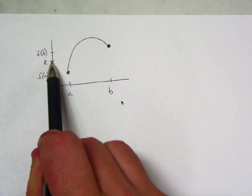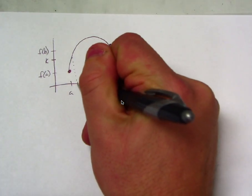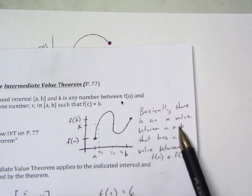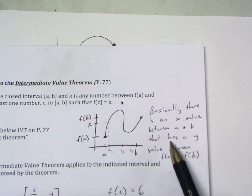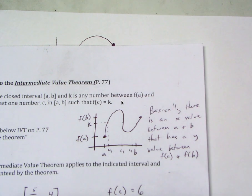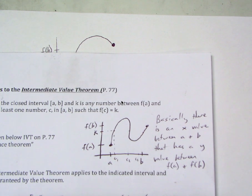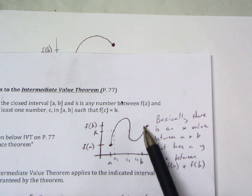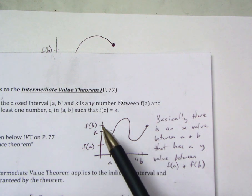You can see it: right here it would be this X value — there would be our C value right there. It's going to happen. Essentially what it means is there is an X value between A and B that has a Y value between F of A and F of B. There's some X value that corresponds to some Y value between F of A and F of B. In other words, you can't jump from this point to this point without going through all of these Y values in between.